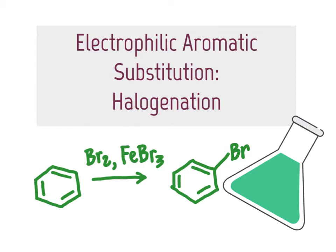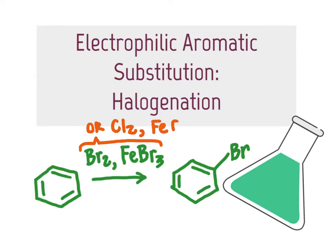In this video, we continue looking at electrophilic aromatic substitution, or EAS, reactions. Here we are going to focus on halogenation reactions, where we'll start with benzene. We'll react with bromine or chlorine with an iron catalyst in order to yield a product where we have replaced one of the hydrogen atoms of the aromatic ring with a halogen atom. As a reminder, as an alternative to using Br2 and iron tribromide, you could also accomplish chlorination by using chlorine and iron trichloride.